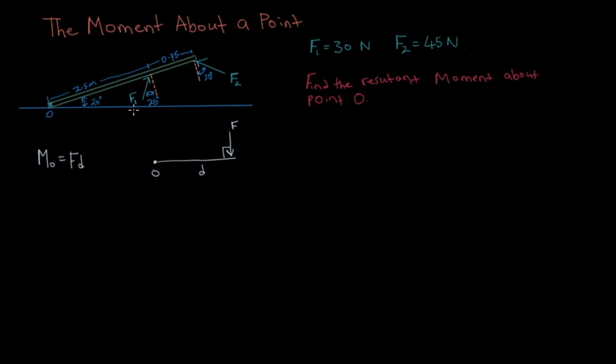So in this case here F1 is not perpendicular to this bar. So in our calculation what we're going to do is we're actually going to use the perpendicular component of F1. And the same thing here, F2 is not perpendicular to the bar. So what we're going to do is we're going to use the perpendicular component of F2.